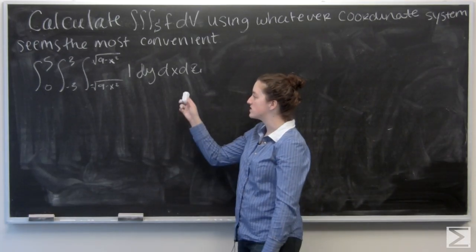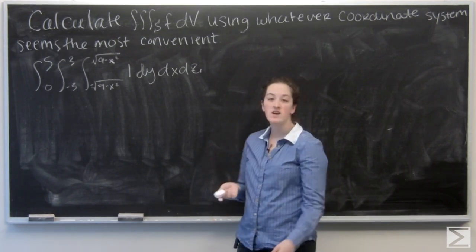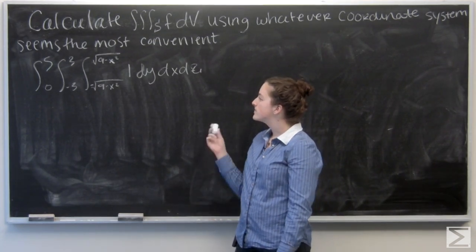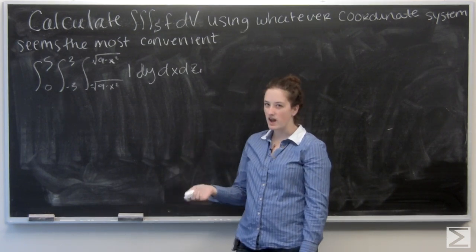For this problem, I'm given a function that I want to integrate over an iterated region. I'm asked to calculate it in whatever coordinates seem to be the most convenient. So I already have them in x, y, and z, but I don't really like those square roots that I have for the y bounds.